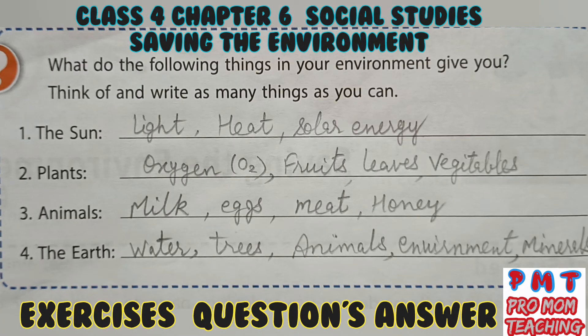What do the following things in your environment give you? Think of and write as many things as you can. First, the sun gives us light, heat, solar energy, etc. Second, plants give us oxygen, fruits, leaves, vegetables, etc.